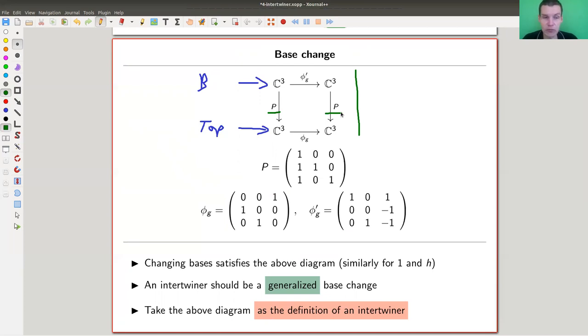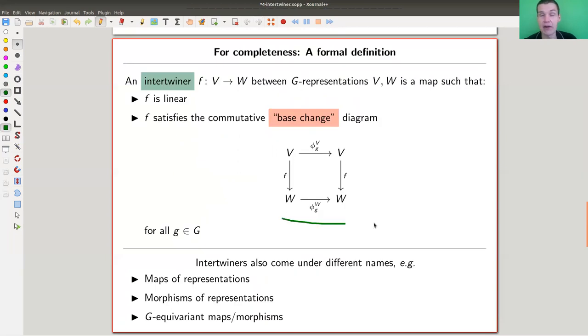And that's the definition of an intertwiner. So we just take that as a definition, and we end up with exactly the same diagram, just now in general. An intertwiner between two representations V and W is a linear map. So my intertwiner is the one here, as before it was my matrix P. It's a linear map such that this diagram commutes. And this is the matrix associated to g in the representation V, and this is the matrix associated to g in the representation W, and of course we want this to hold for all group elements. Okay, so it's really just the base change diagram, taking out the property that f does not need to be invertible.